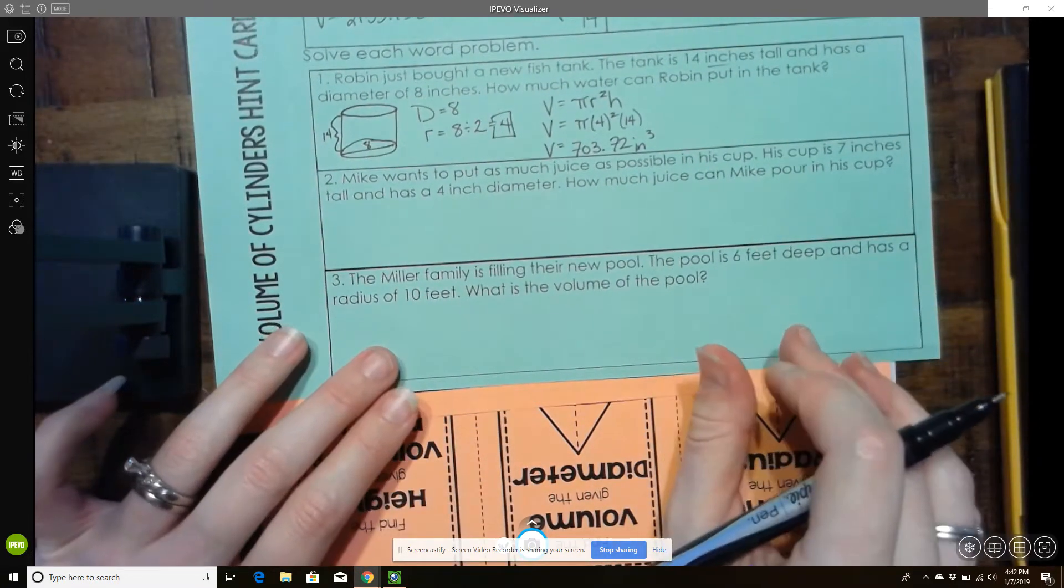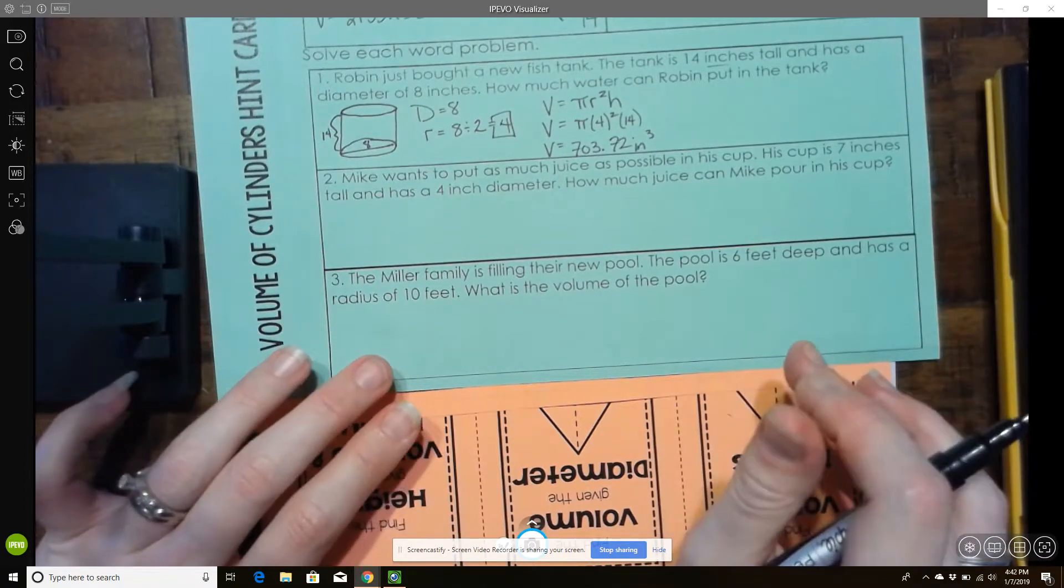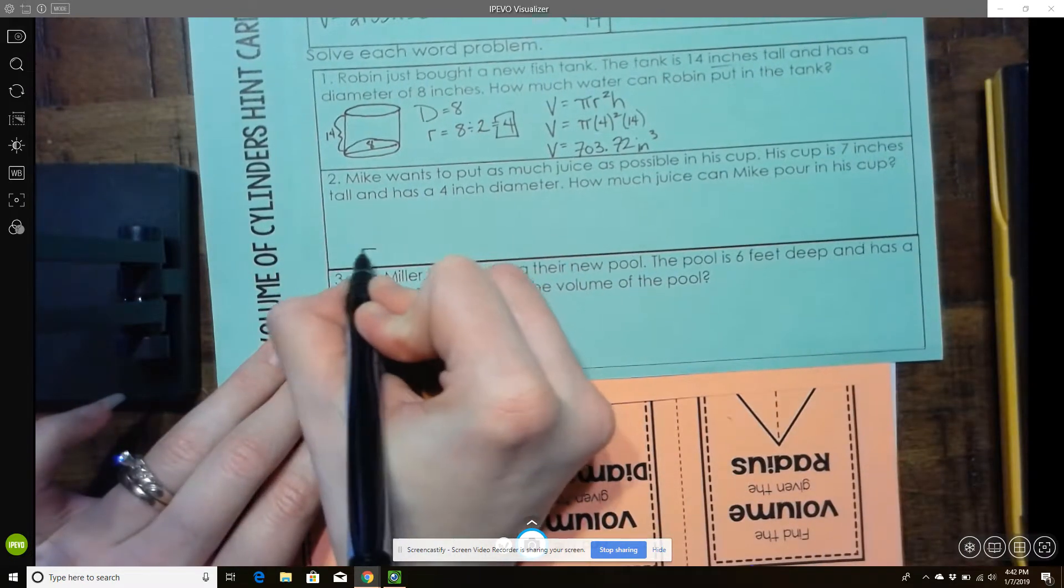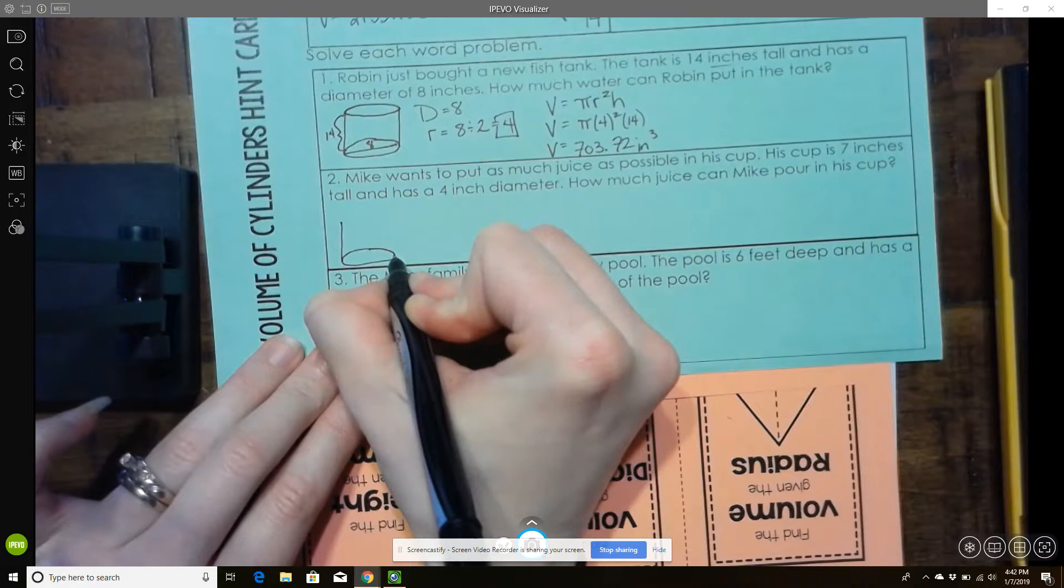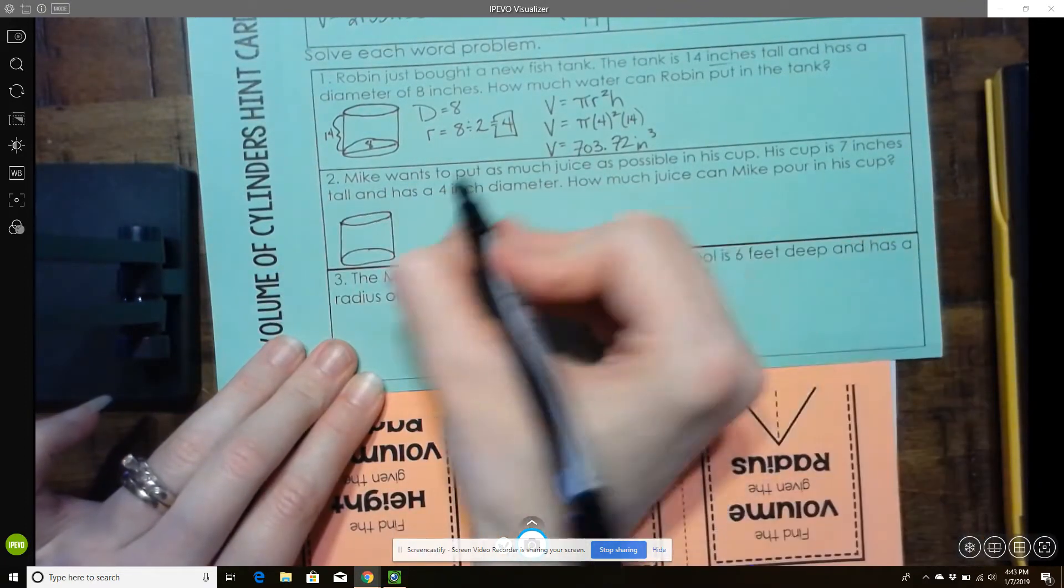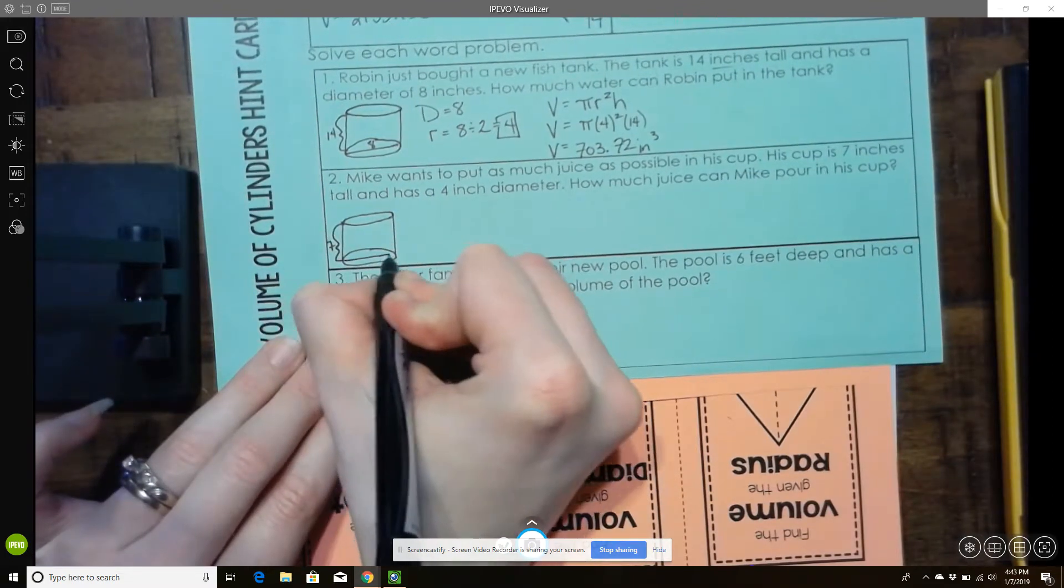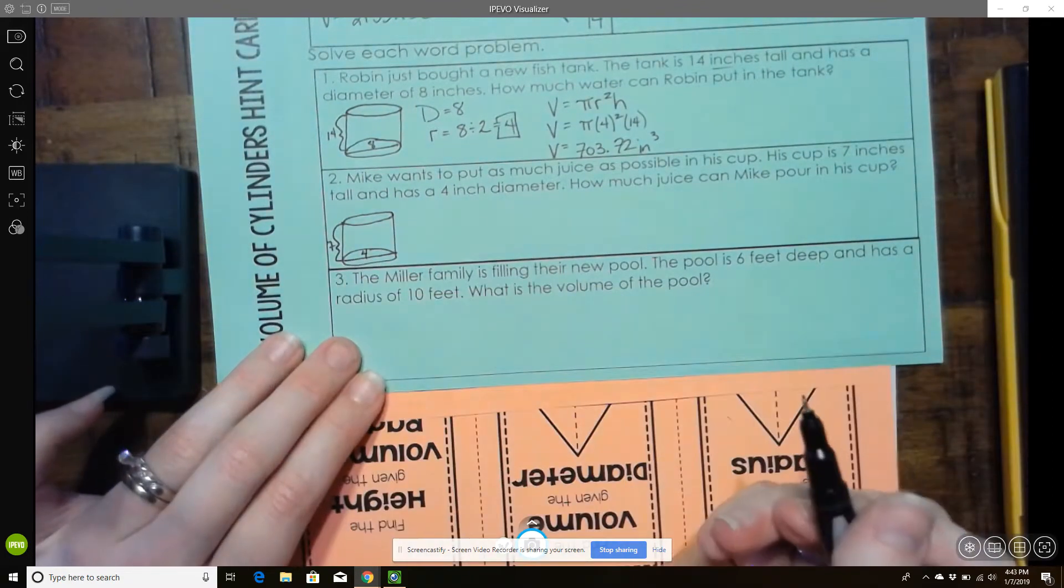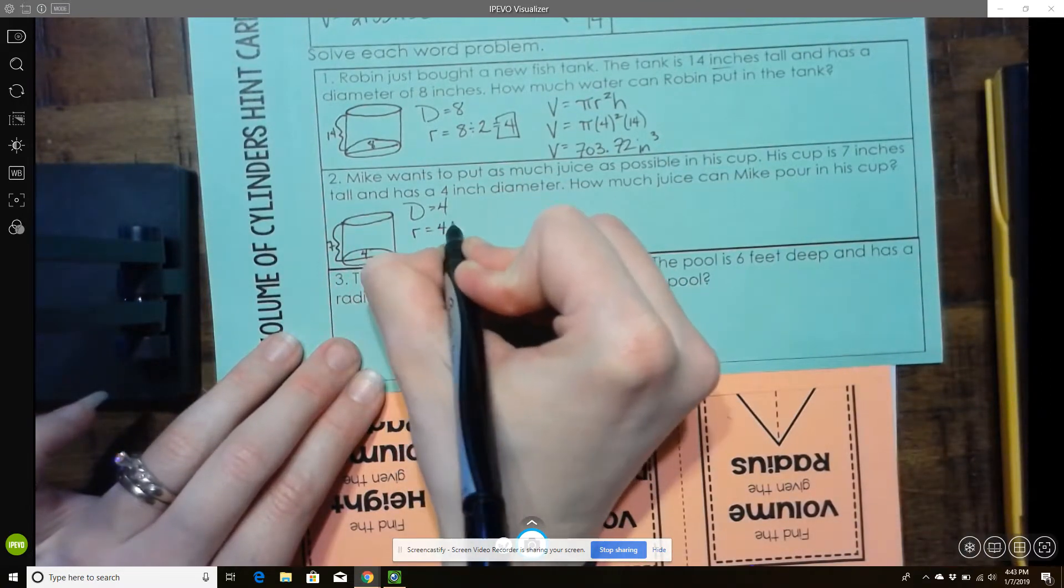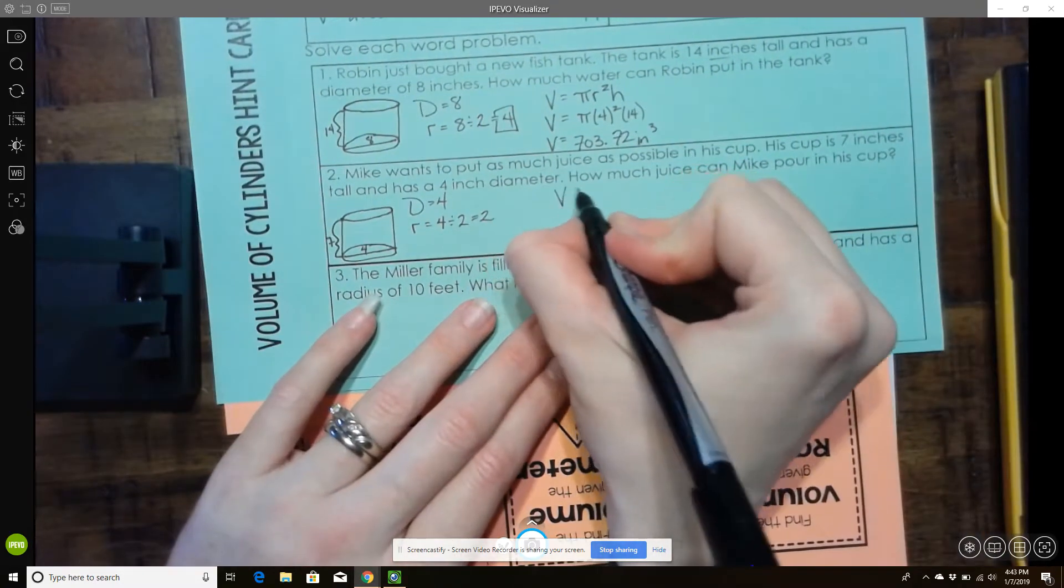All right, number 2. Mike wants to put as much juice as possible in his cup. His cup is 7 inches tall and has a 4 inch diameter. How much juice can Mike pour in his cup? All right. So we've got a cup here. And it says it's 7 inches tall. And it's got a diameter of 4. So again, they've given me the diameter. I need the radius. So I have to divide the diameter by 2. And now I can plug everything into my formula.